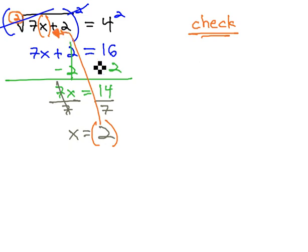So checking it, the original problem was the square root of 7x, or 7 times 2, plus 2, and we're hoping it equals 4.